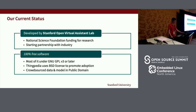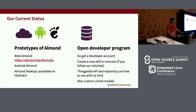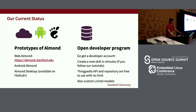We have built prototypes of Almond: a web version, a scalable multi-user cloud version available at almond.stanford.edu, an Android app designed to keep data, computation, credentials, and user information stored locally on the phone, and a desktop version for Linux/GNOME available on FlatHub. Our developer program on Thingpedia is open — you can get a developer account right now, create new skills in minutes by following our tutorials, and there is no limit on contributing or using the APIs and repositories.